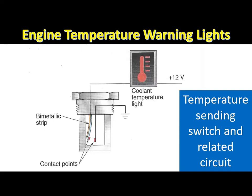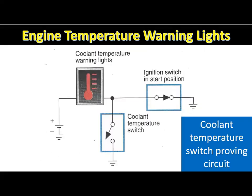The sending unit for the engine temperature warning light contains a bimetallic strip and a set of normally open contacts. Normally open contacts remain in the open position until acted upon by temperature or pressure. When the engine temperature is below a specific threshold, the contacts in the temperature sending unit remain open and the temperature warning light remains off.